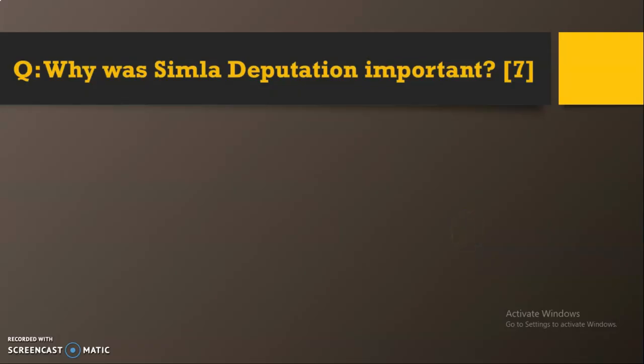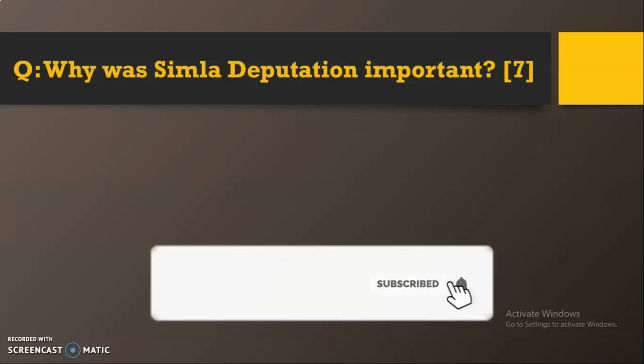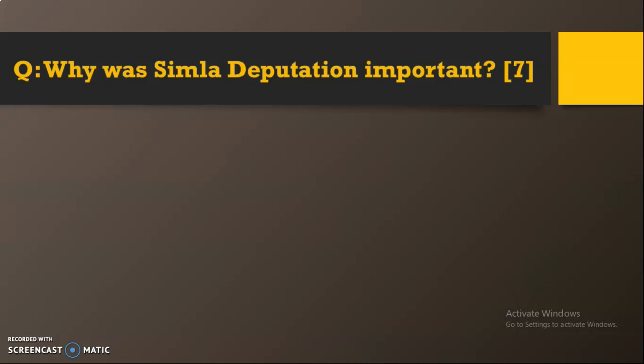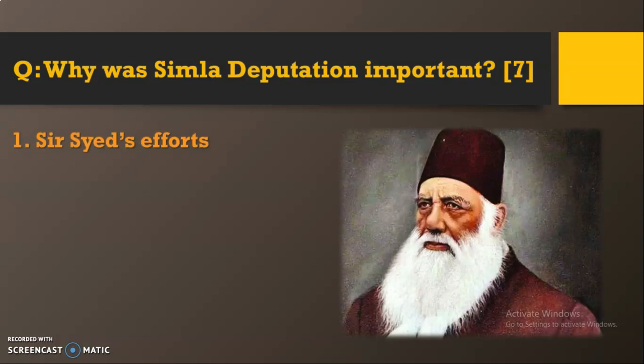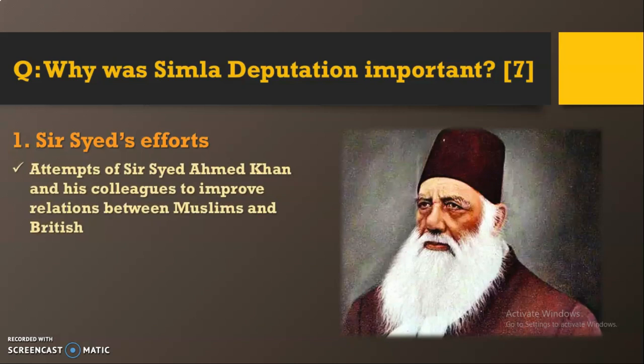The second question from this topic — a seven-mark question — is: 'Why was the Shimla Deputation important?' or 'Why was the Shimla Deputation an important event for the Muslims of the subcontinent?' In a seven-mark question we need to write three paragraphs with proper explanation. The first paragraph is related to the efforts of Sir Syed Ahmad Khan. The British accepted the Shimla Deputation's two basic demands.